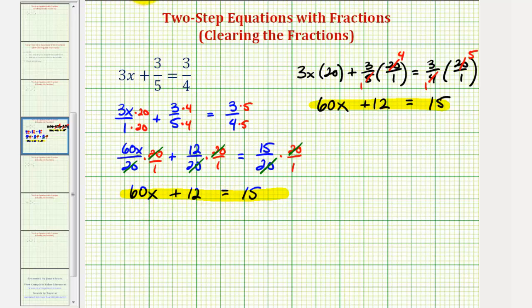Either way, we're now going to solve this two-step equation. We will subtract 12 on both sides. So we have 60x equals 15 minus 12 is 3, and divide both sides by 60. So we have x equals 3/60, which does simplify. 3 and 60 share a common factor of 3. 3 divided by 3 is 1, and 60 divided by 3 is 20. So our solution is x equals 1/20.